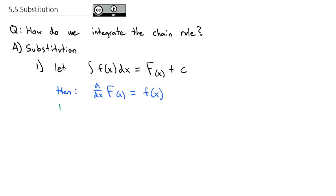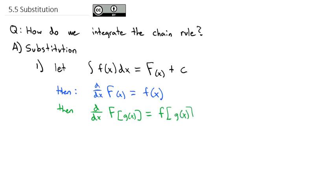But if we take it one step further and ask to take the derivative of capital F of another function, let's say of g(x), we could use the chain rule. The chain rule says we take the derivative of the outside — the derivative of capital F is lowercase f of g(x) — then multiply by the derivative of the inside, g'(x).